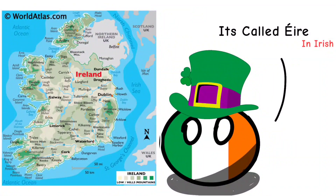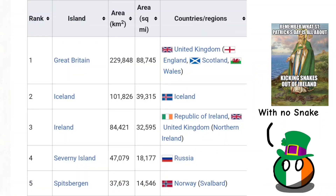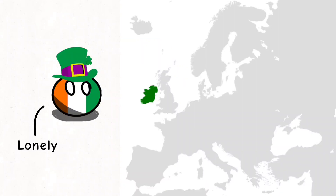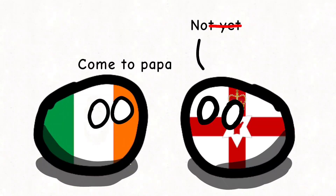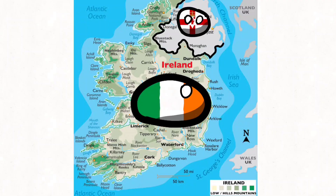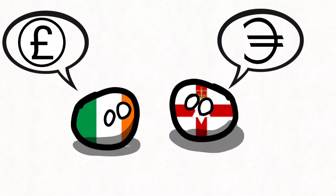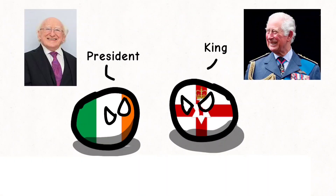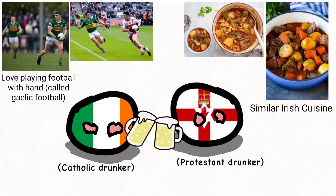This is the island of Ireland. It's the third largest island in Europe, located to the northwest of the continent. There are two separate countries on this island, the Republic of Ireland and Northern Ireland. They have different currencies, governance, and an almost similar culture.